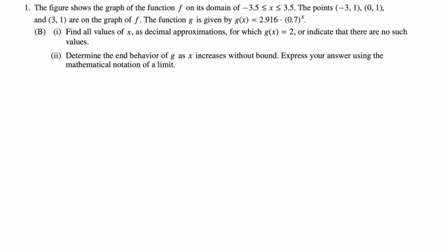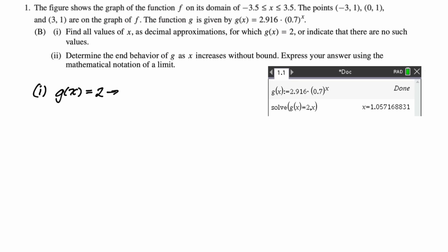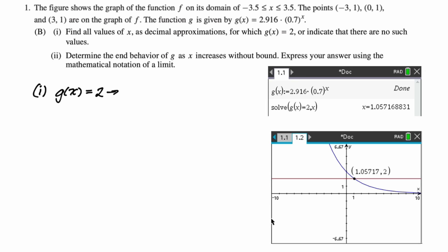Let's take a look at the next part. We want to find all values of x as a decimal approximation for which g of x equals 2 or indicate that there are no such values. So in this case, we're trying to solve g of x equals 2. I can do this two different ways on the calculator. First up, I can literally just use solve. Solve g of x equals 2. That's a valid way to do it. The other way to do it is we could graph g of x and graph 2 and find the intersection point. So I did both of them just to show you the options, but either way, you're going to get 1.057 because we're going three decimal places.